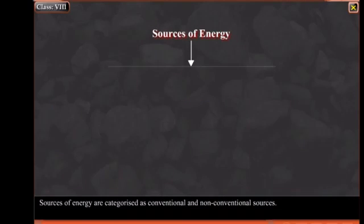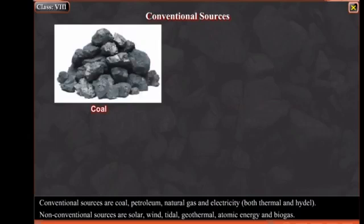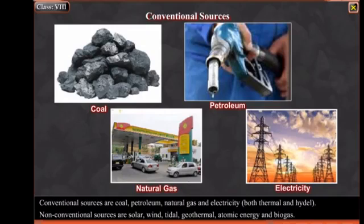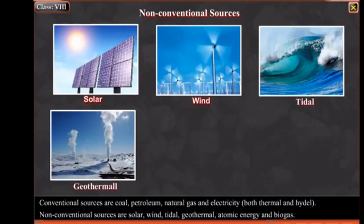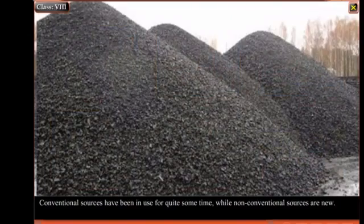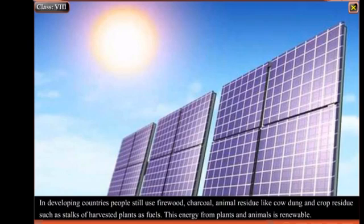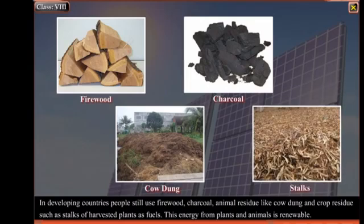Sources of energy are categorized as conventional and non-conventional. Conventional sources are coal, petroleum, natural gas, and electricity — both thermal and hydel. Non-conventional sources are solar, wind, tidal, geothermal, atomic energy, and biogas. Conventional sources have been in use for quite some time, while non-conventional sources are new. In developing countries, people still use firewood, charcoal, animal residue like cow dung, and crop residue such as stocks of harvested plants as fuels. This energy from plants and animals is renewable.